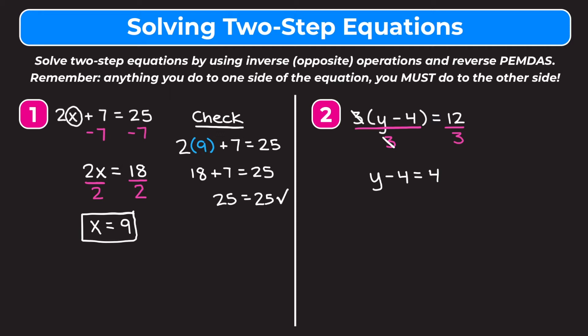On the left side we have to get rid of this 4 that's being subtracted, and we're going to do that by adding 4 to both sides, because addition and subtraction are inverse operations. On the left, minus 4 and positive 4 cancel each other out and go to 0, so we're left with y. On the right, 4 plus 4 is 8. So y is equal to 8.